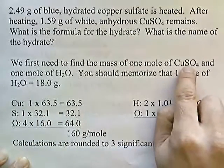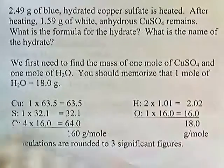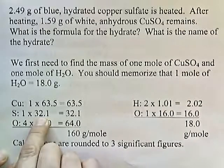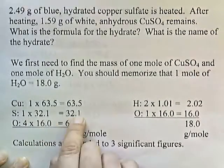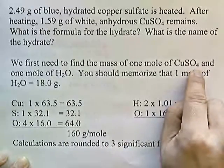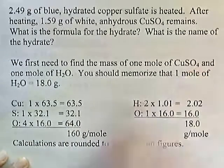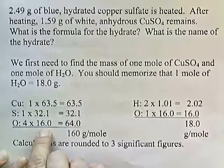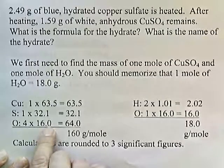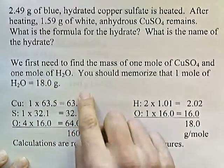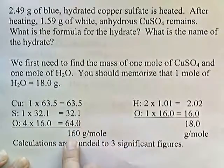Sulfate: 1 sulfur. From the periodic chart, sulfur is 32.1. Oxygen: 4 oxygens, so 4 times 16 — 16 from the periodic chart for oxygen — that gives 64. We add it all up, we get 160.